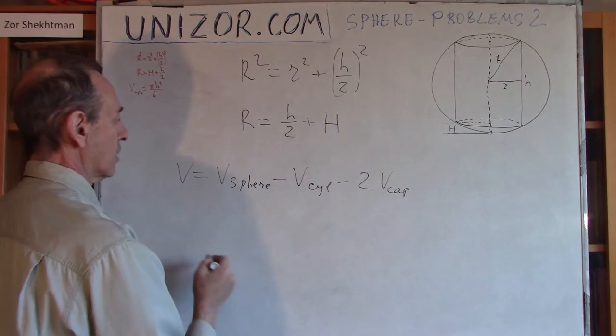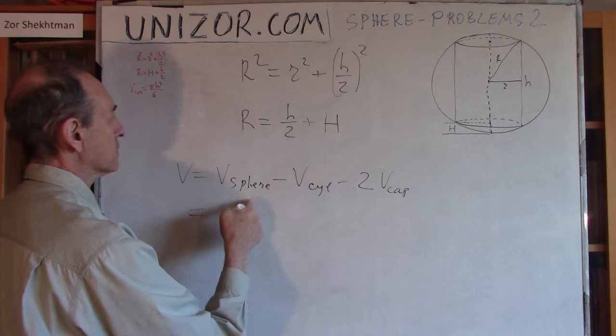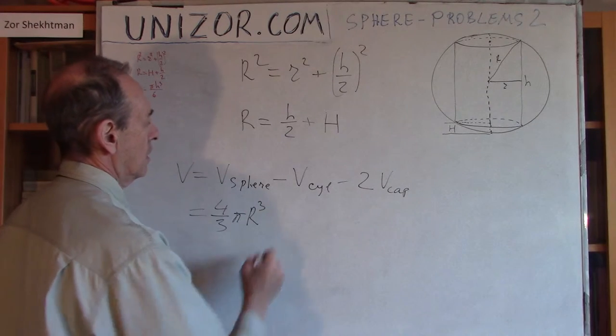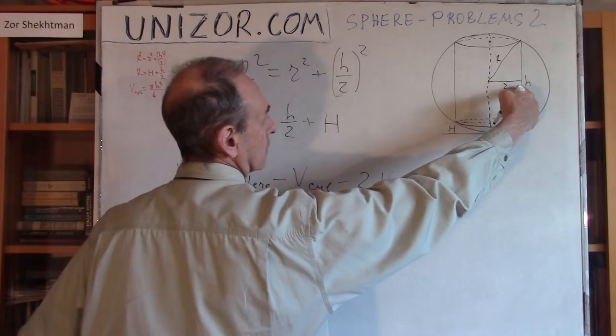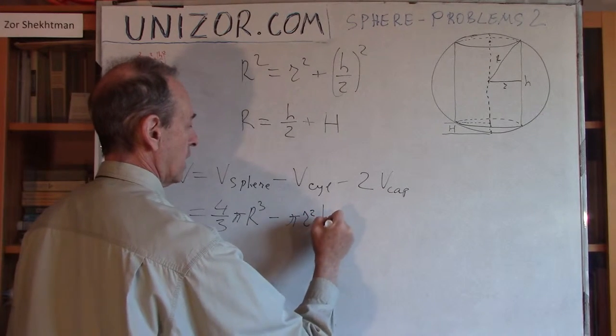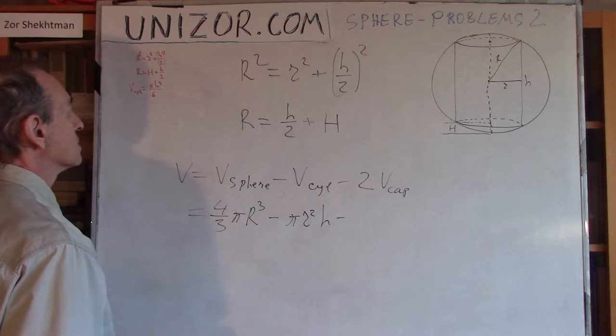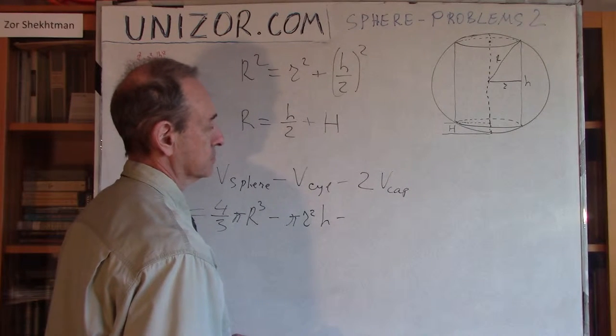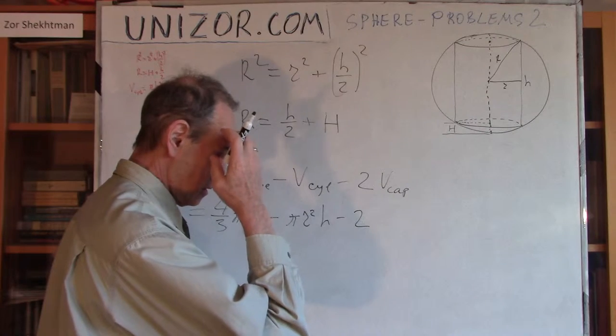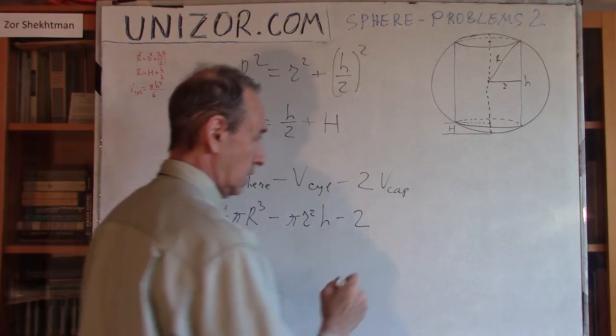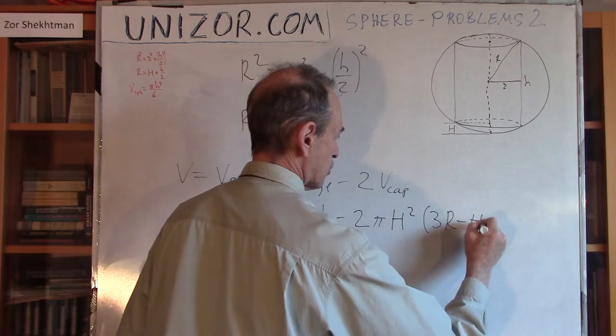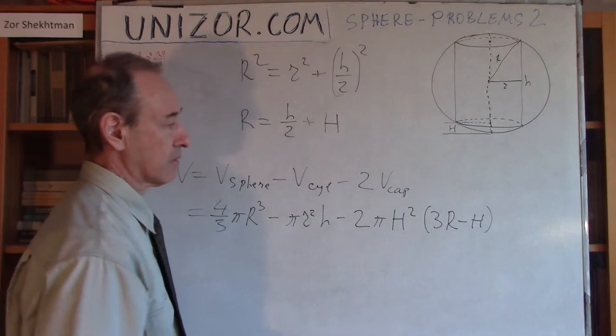Volume of the cylinder and two caps we take out. Okay, in terms of these variables, it's equal to, volume of the sphere is four-third pi R cube, minus volume of the cylinder is, if radius is lowercase r, and the height is lowercase h, it's pi r square h. It's pi r square h. And minus two volume of the cap is